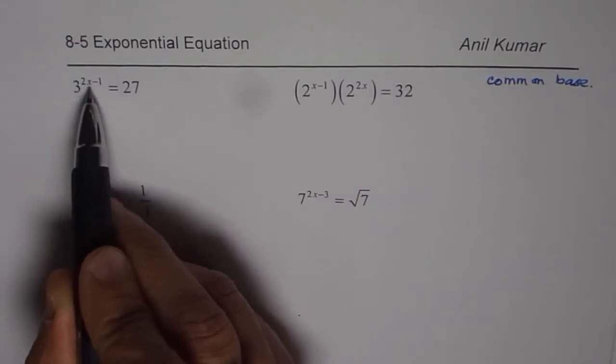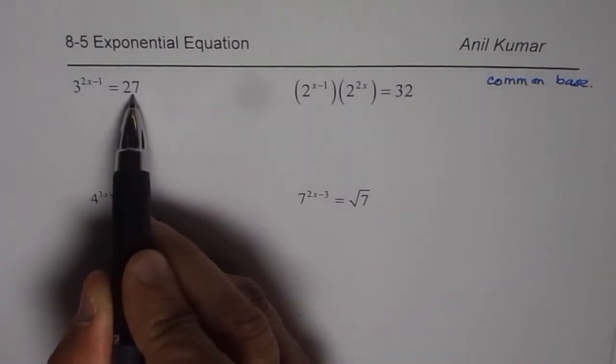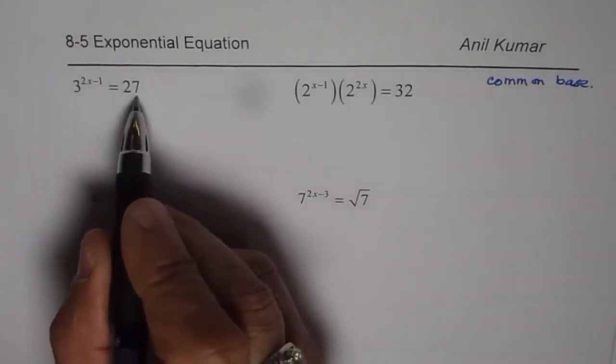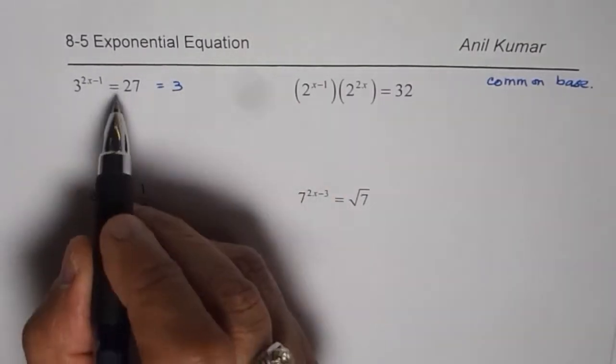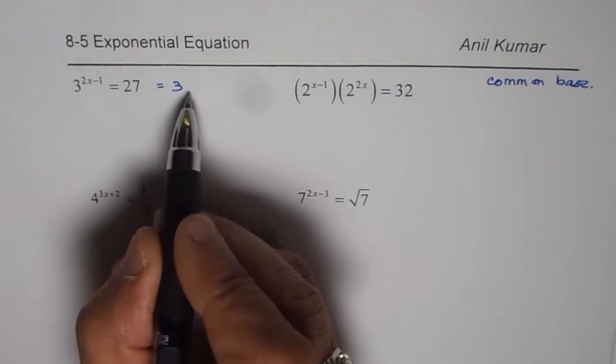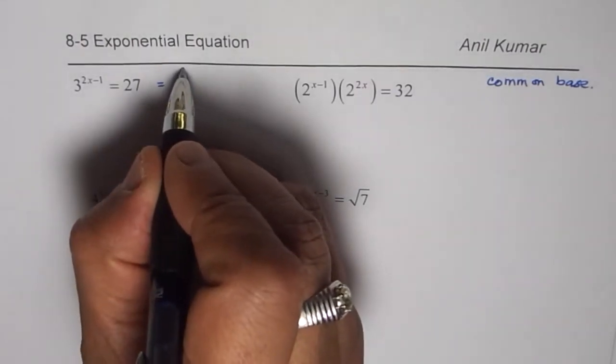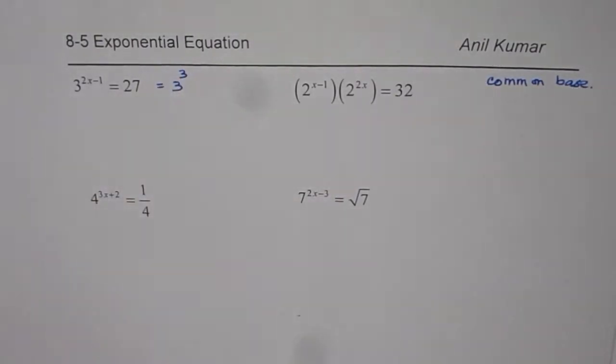We have 3 to the power of 2x minus 1 equals to 27. We have to write 27 as 3 to the power of something. So 3 times 3 is 9, 9 times 3 is 27. So we get 3 to the power of 3 as 27.